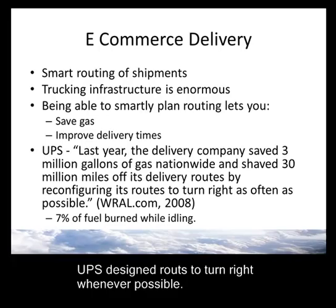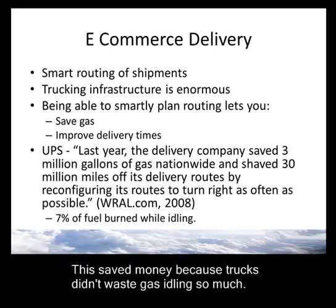In 2008, UPS changed their delivery routes in a way you might not think of. They designed their routes so that trucks would turn right whenever possible. Apparently, 7% of the fuel cost for UPS was during idle time spent at red lights and waiting periods. By arranging routes to turn right, much of the idle time was eliminated.